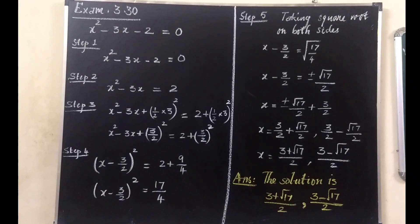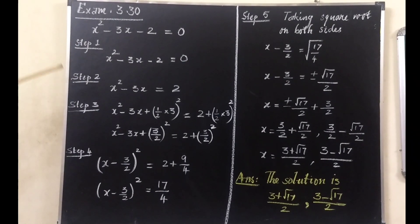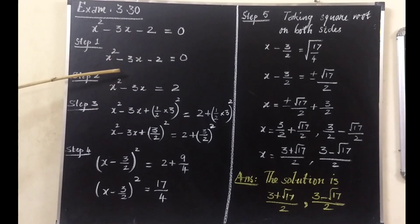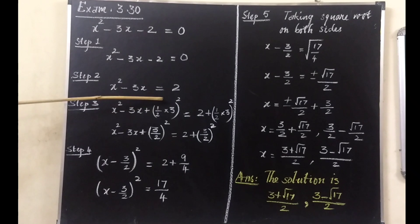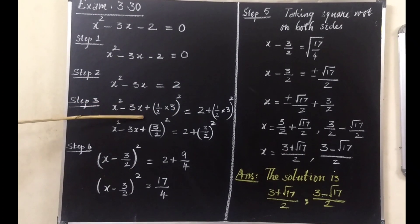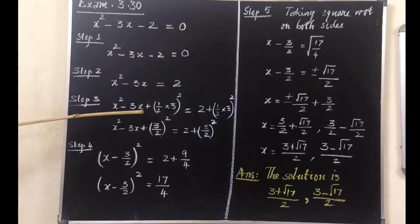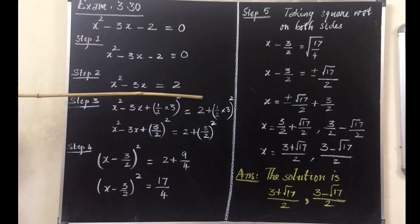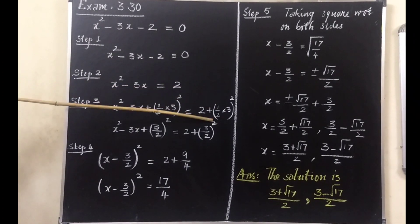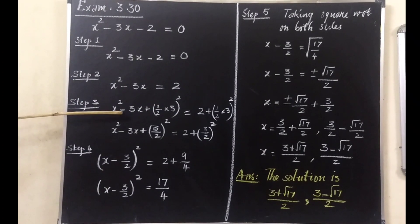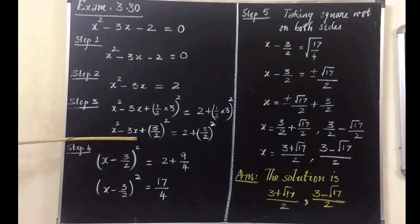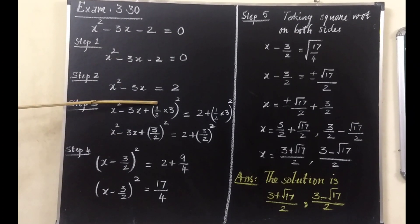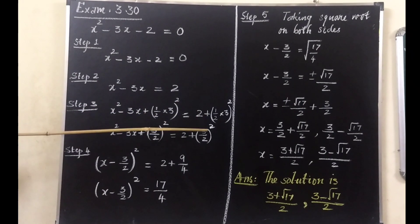Then the next step: we take the constant term to the right hand side. The constant term is minus 2, which goes to the right hand side as plus 2. Step 3: we add the square of half of the coefficient of x on both sides. Don't worry about the sign — just take the number before x, which is 3. Take the square of half of 3, and add that on both sides.